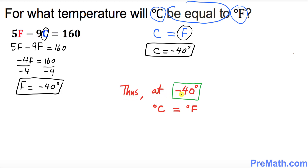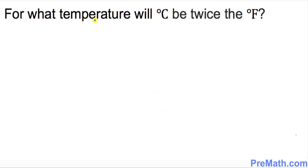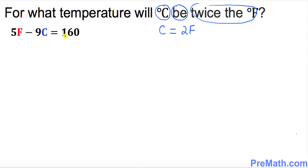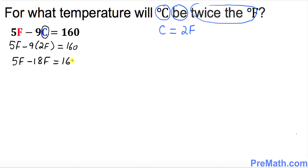Finally, for what temperature will degrees Celsius be twice the degrees Fahrenheit? Converting to algebraic form: C equals 2 times F. Using our formula and replacing C with 2F, we get 5F minus 9 times 2F equals 160, which gives 5F minus 18F equals 160.